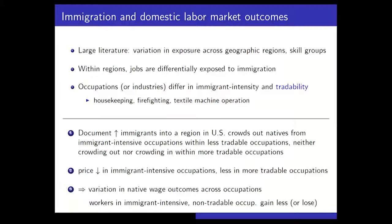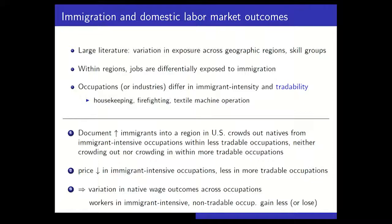In the paper we're going to do three things. First, we'll document empirically that when immigrants come to a region like Los Angeles, native workers are displaced from immigrant-intensive occupations toward non-immigrant-intensive occupations within the set of non-traded occupations—we'll call that crowding out. In contrast, within tradable occupations we find neither crowding out nor crowding in. Second, using a simple model, we'll explain theoretically why adjustment differs between tradable and non-tradable occupations.